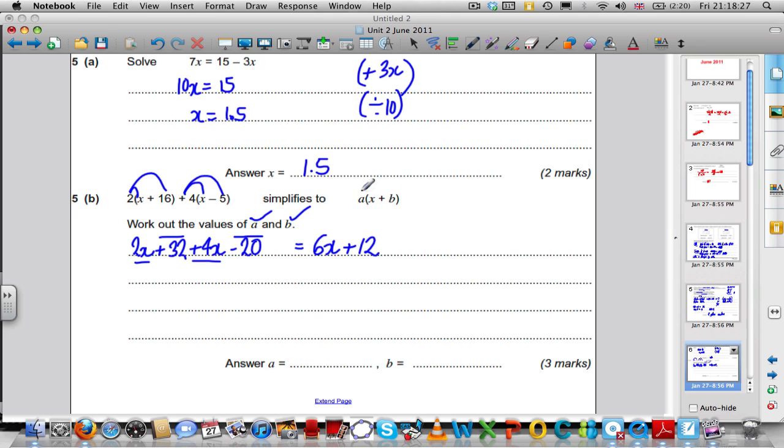It's not quite in the form we want it to be. We want x in brackets, so we must have to factorise out a common factor. What goes into 6x and 12? Well, 6 does, so you factorise out 6, and you're left with x plus 2 inside the brackets. What's a? Well, a is the number outside the brackets, so a is 6. b is the number inside the brackets, so b is equal to 2.